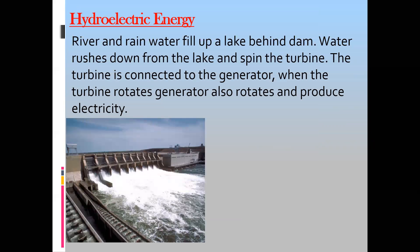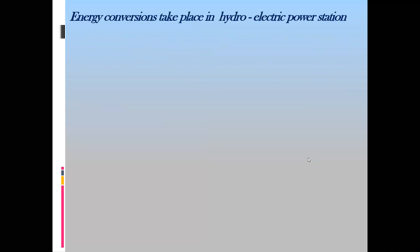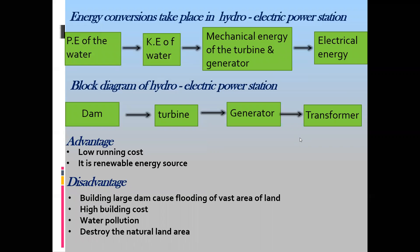For hydroelectric power stations, first we stop the flow of water by building a dam. When we allow the water to flow from a greater height, the potential energy changes to kinetic energy, which is used to rotate the turbine. As the turbine rotates it is connected to a generator which produces electricity. There are also advantages and disadvantages of hydroelectric power stations.